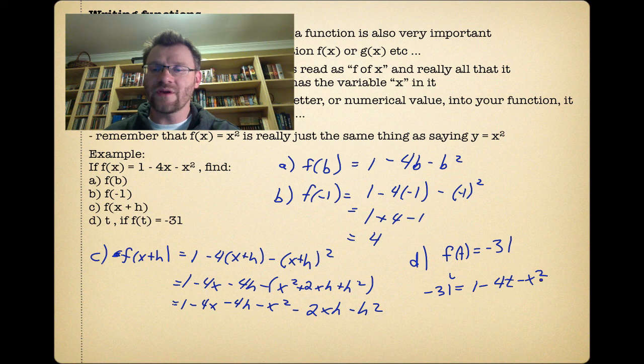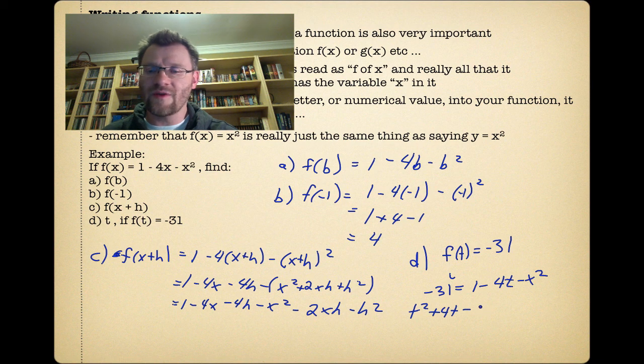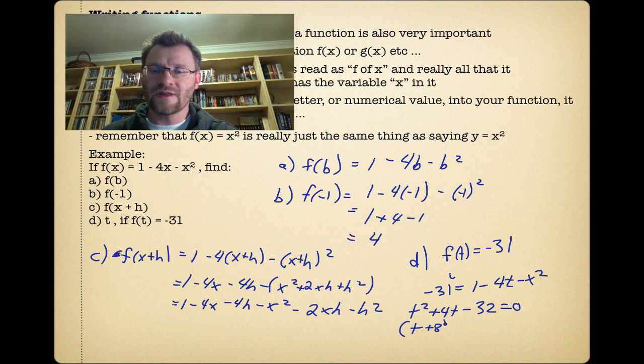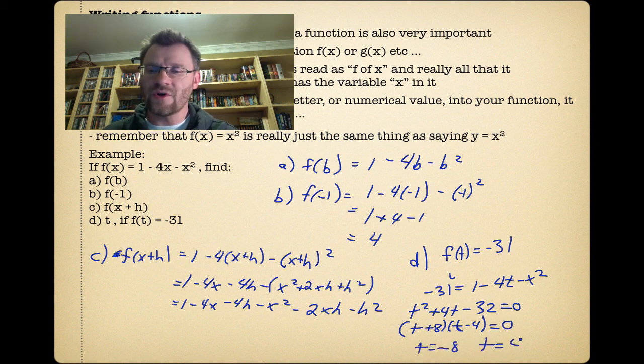So we get t² + 4t, if we move it all to the left-hand side, minus another 1 on this side. That makes it -32 = 0. And we can factor that thing. That's (t + 8)(t - 4) = 0. So t is equal to -8 and t is equal to positive 4.